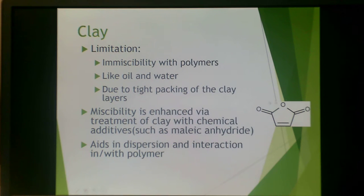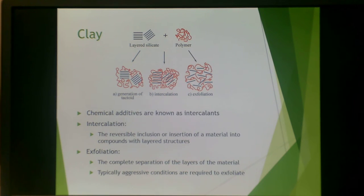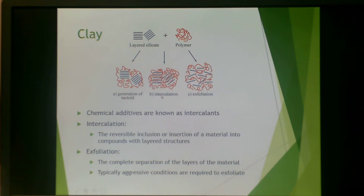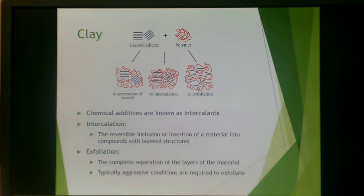One particular material used for this is maleic anhydride. Schematically, you have a layered silicate and then polymer. Typically the clay is immiscible with the polymer. If you can separate the layers and get the polymer to go in between, that is a process known as intercalation. If you can get the layers to come completely apart from their stacks, it is called exfoliation. Intercalation is a reversible insertion of material into the compound with layered structures, while exfoliation is a complete separation of layers, which typically requires very aggressive conditions.